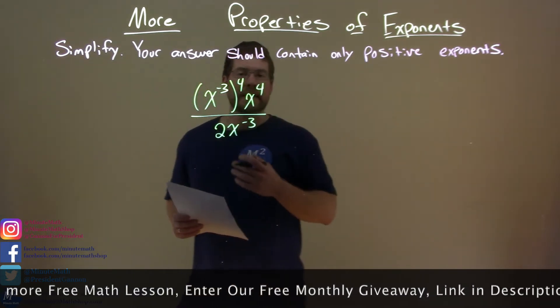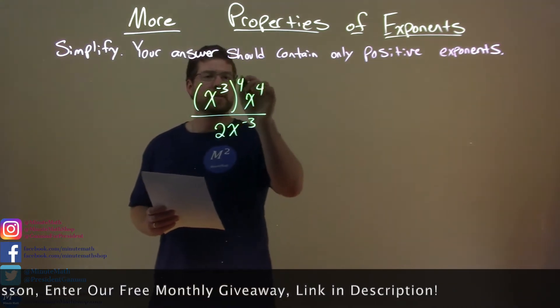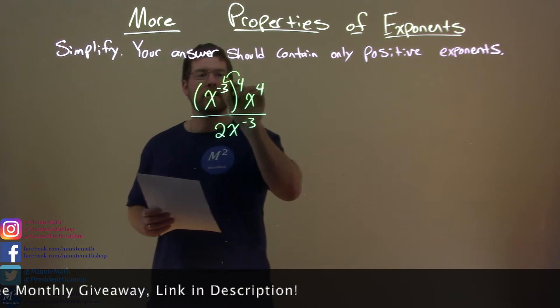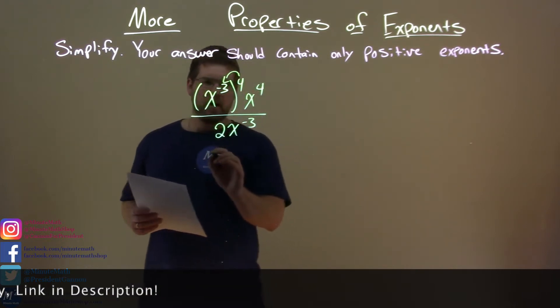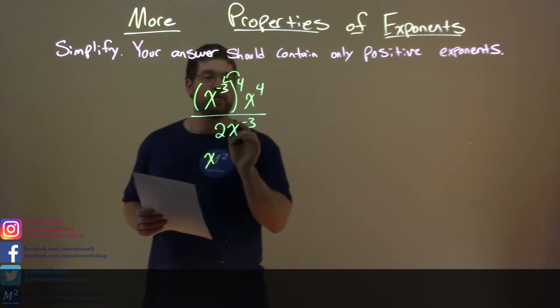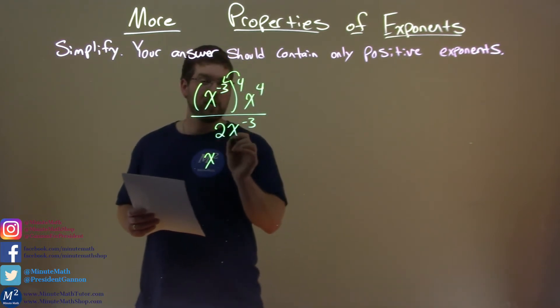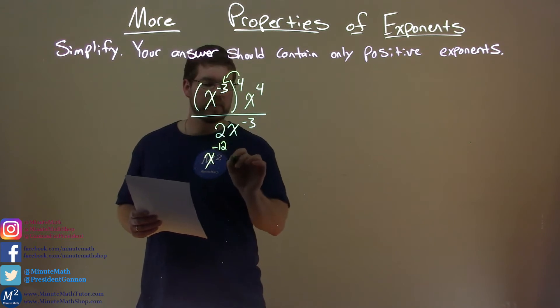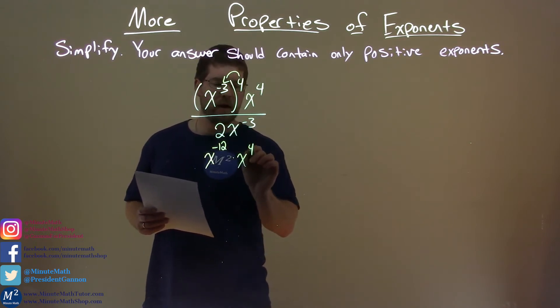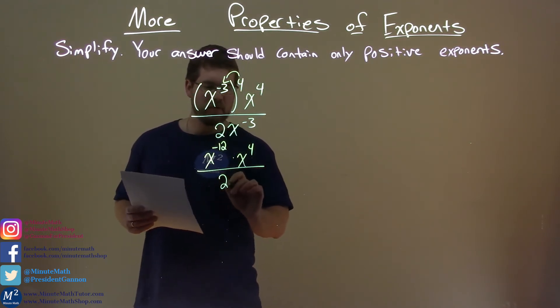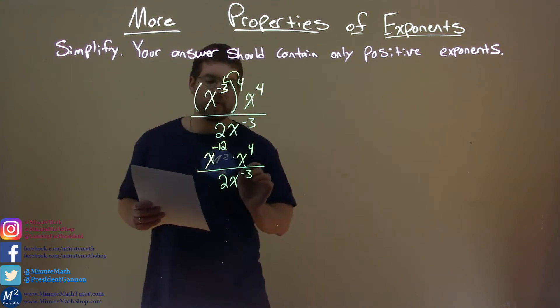What do we need to do here? Well, first thing I'm going to do is actually distribute this fourth power exponent inside here. So we have x to the negative 3 times 4, where we multiply the exponents. So we have negative 3 times 4, which is negative 12, times x to the fourth power.